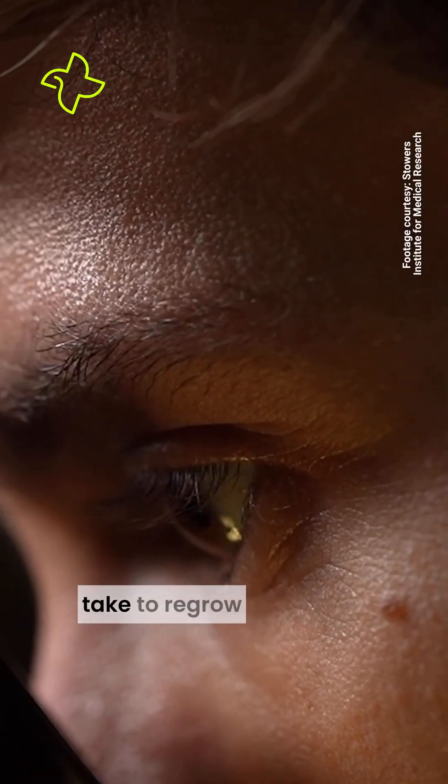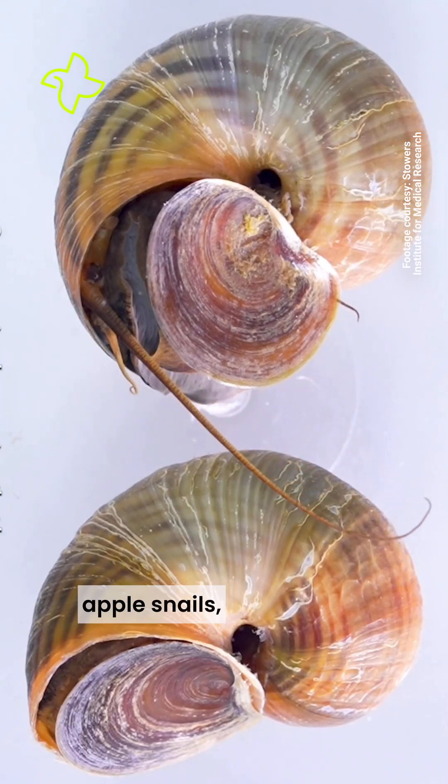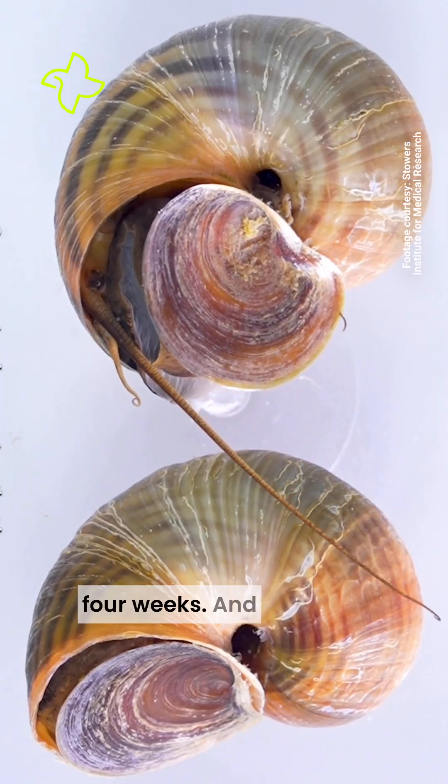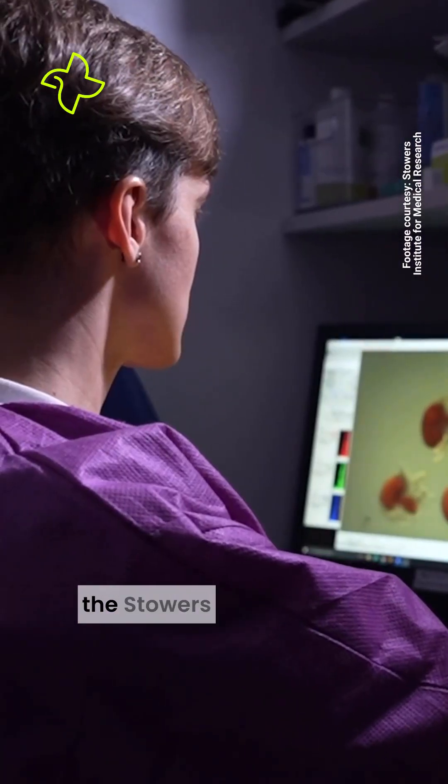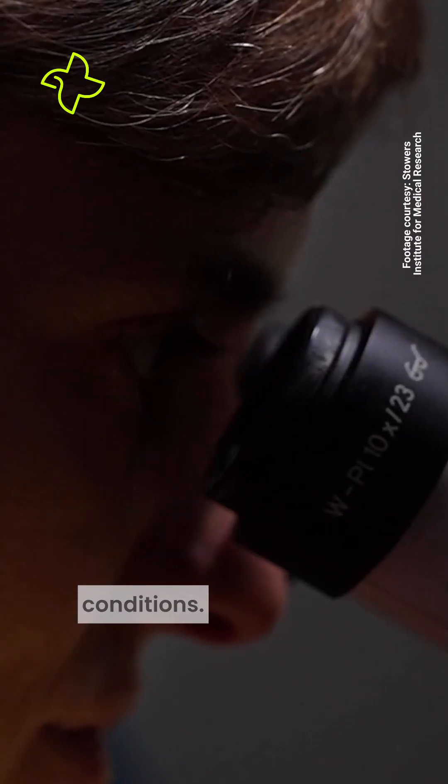How long does it take to regrow an eye? For these apple snails, the answer is four weeks. And researchers at the Stowers Institute for Medical Research are studying what that means for treating human eye conditions.